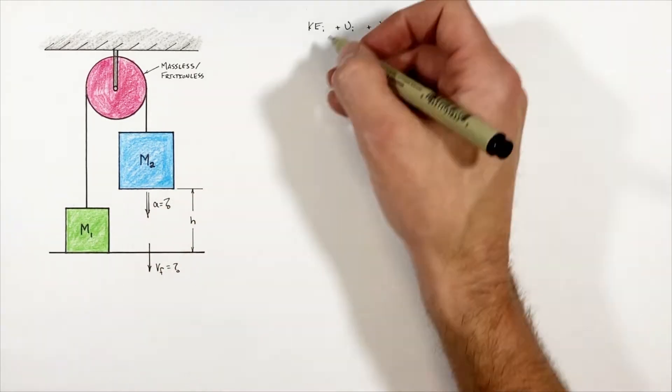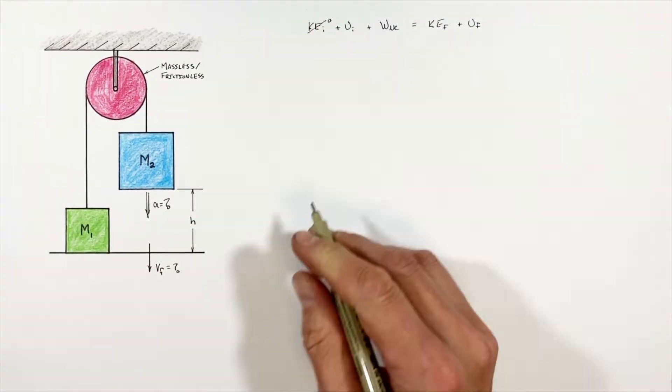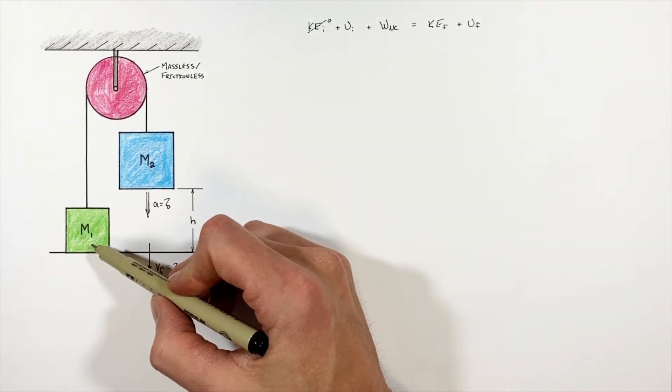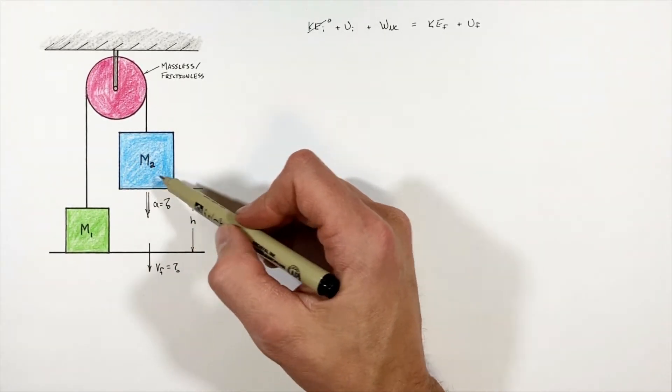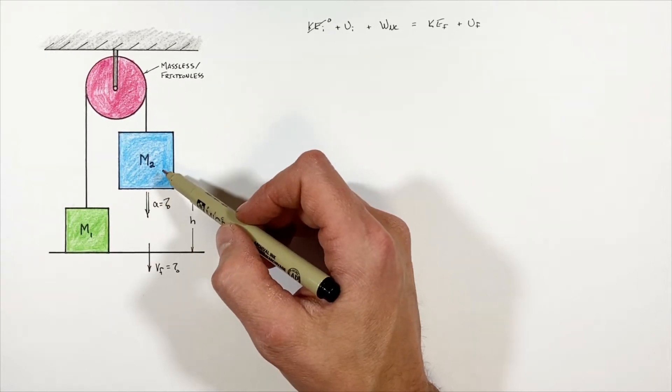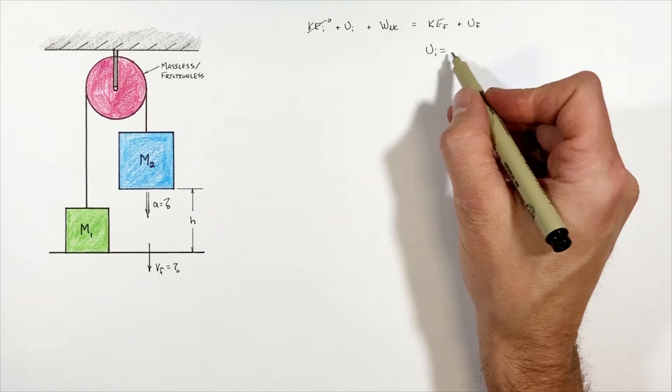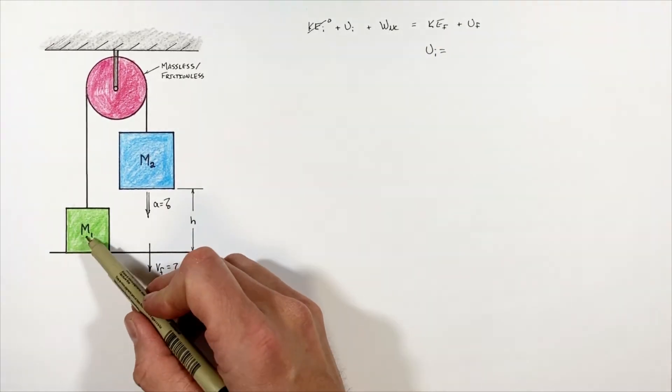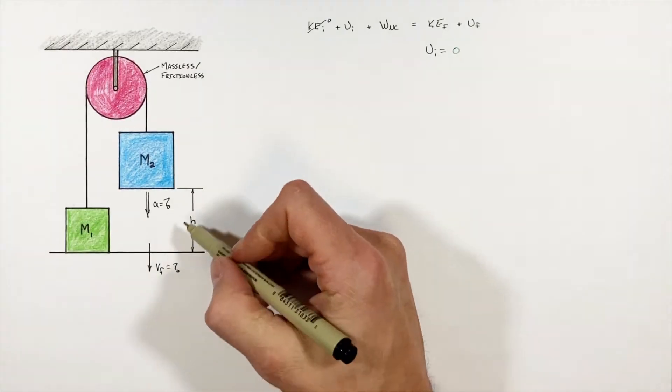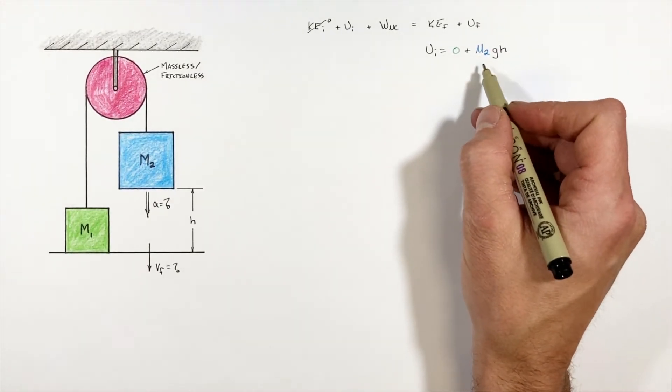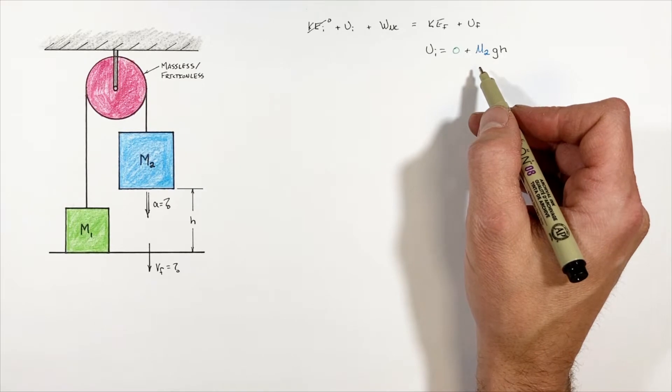So you can see if everything starts at rest that's going to make our initial kinetic zero. As far as initial potential goes, this block is starting on the ground but this other block is starting some distance up off of the ground. So there is in fact going to be some initial potential. Now the initial gravitational potential is going to be given by the potential of this block plus the gravitational potential of this other block. And yes, this is getting color-coded because that's how we roll around here.